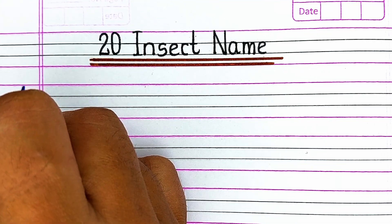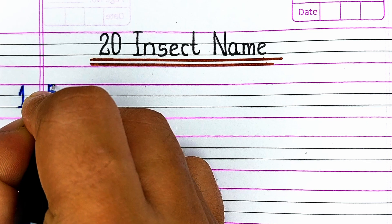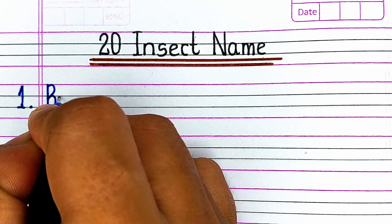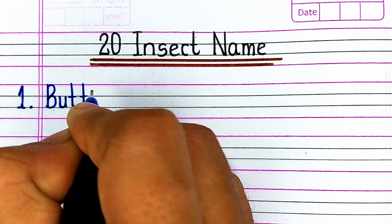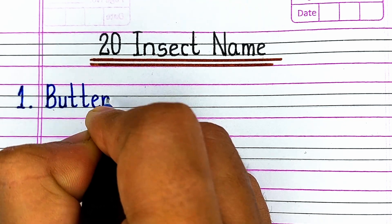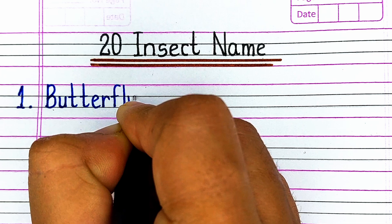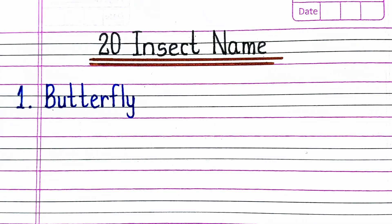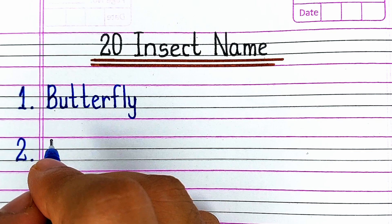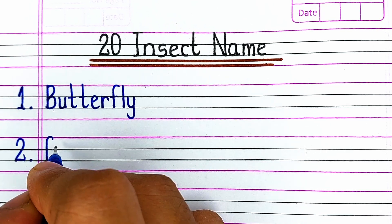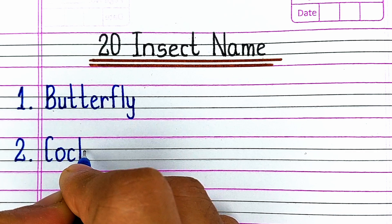Hello viewers, welcome to our channel Try to Learn. In this video, we will learn and write insect names in English. If you find this video helpful, please hit the like button and for more such videos, consider subscribing to our channel Try to Learn. First one is B-U-T-T-E-R-F-L-Y, Butterfly.